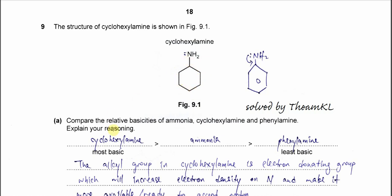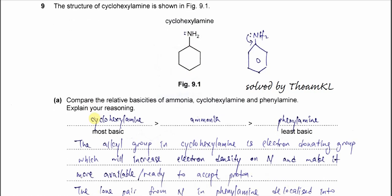For part A, we are asked to compare the relative basicities of ammonia, cyclohexylamine, and phenylamine. You need to identify which is the most basic and which is the least basic.